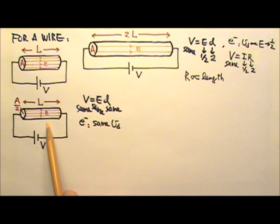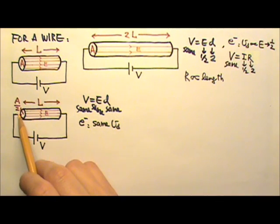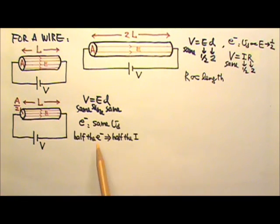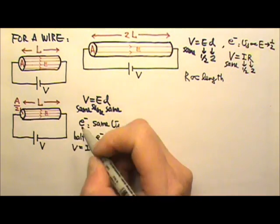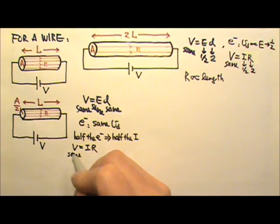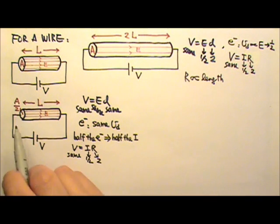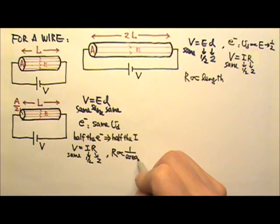The same strength electric field means the same drift speed for electrons. But the thinner wire with half the cross-sectional area has half the free electrons at the cross-section. Half the electrons at the same speed means half the current. Using V equals IR, the two wires have the same voltage, so the thinner wire with half the current must have twice the resistance. Half the cross-sectional area gives twice the resistance, meaning resistance is inversely proportional to the cross-sectional area.